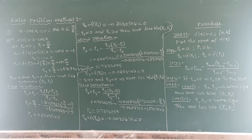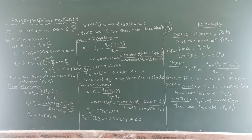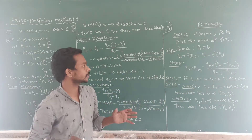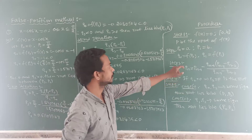This method is also the same as the 3k method, but here we have some differences like the bisection method. In this method we have some difficulties.